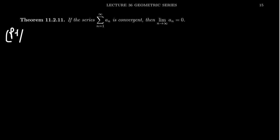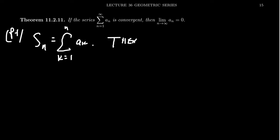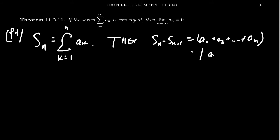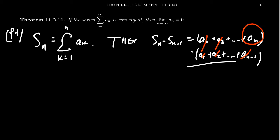Here's an argument — the proof is not that complicated. If we take the sequence of partial sums S sub n, this is going to be the sum where k ranges from 1 to n of the sequence a sub k. Notice that S sub n minus S sub n minus 1 looks like a1 plus a2 up to a sub n, minus a1 plus a2 up to a sub n minus 1. The a1s cancel, the a2s cancel, all the way up, and the only term that doesn't cancel is a sub n. So S sub n minus S sub n minus 1 equals a sub n — that's an important observation.